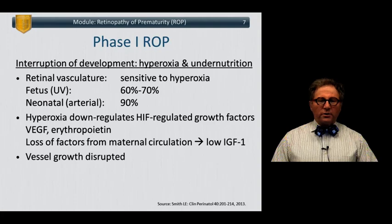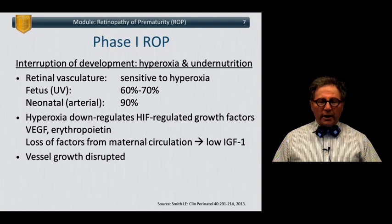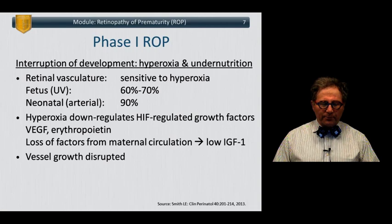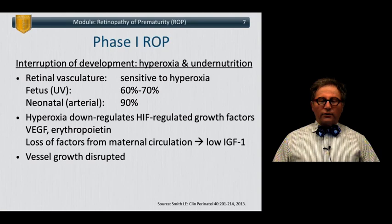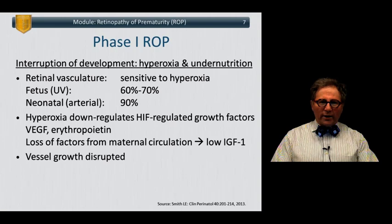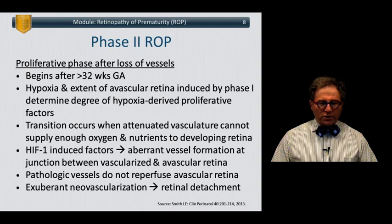The retinal vasculature is very sensitive to hyperoxia. The PO2 in the fetus may be in the range of 30 to 40 mmHg, but surges even in room air at birth. This was compounded historically when high concentrations of oxygen were pumped into incubators for premature babies, causing an enormous epidemic of retinopathy of prematurity. Hyperoxia down-regulates hypoxia-induced factor, which regulates growth factors such as VEGF and erythropoietin, and IGF-1 levels fall once the baby is delivered and out of the uterus.